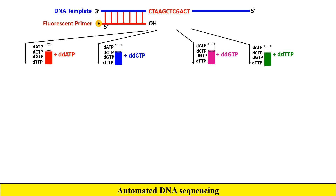We now have four test tubes, each containing all the deoxy nucleotide phosphates plus one specific dideoxy nucleotide triphosphate. In the first test tube with ddATP, wherever ddATP incorporates into the new strand it breaks the fragment there. We get fragments of specific lengths — here you can see the first, second, and third fragments produced.